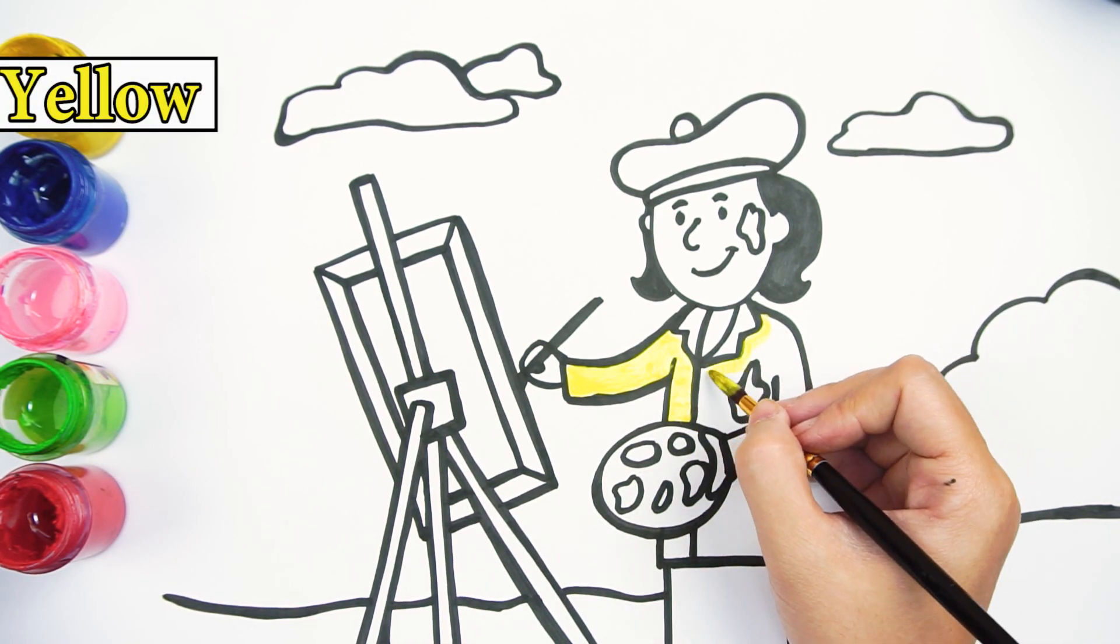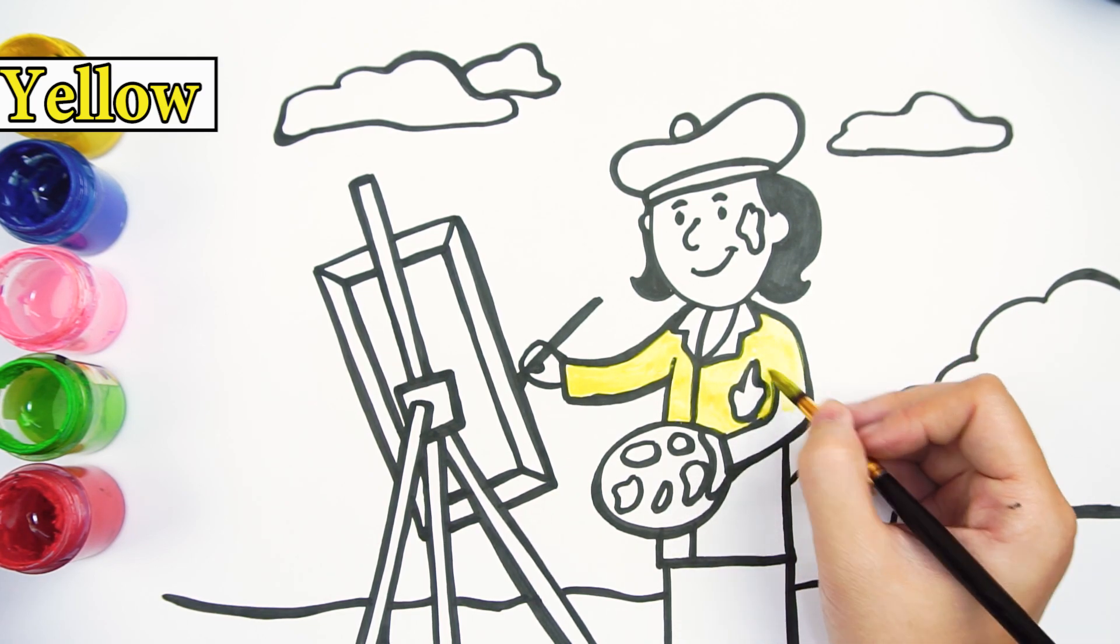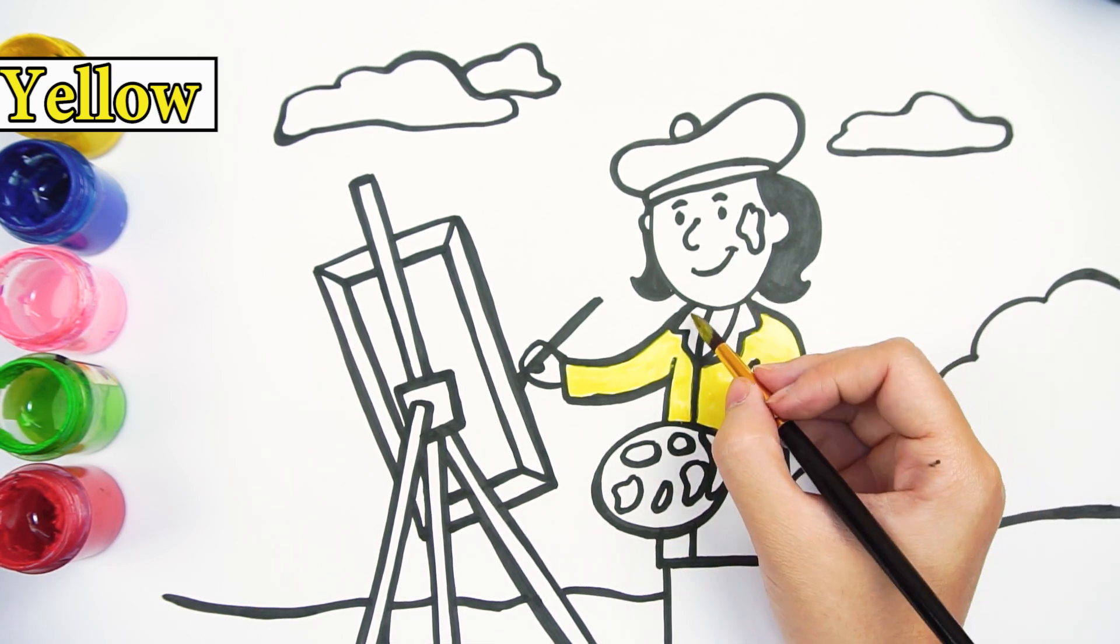First I will paint yellow for the shirt, a part of the palette and the middle pillow behind the step of drawing paper.